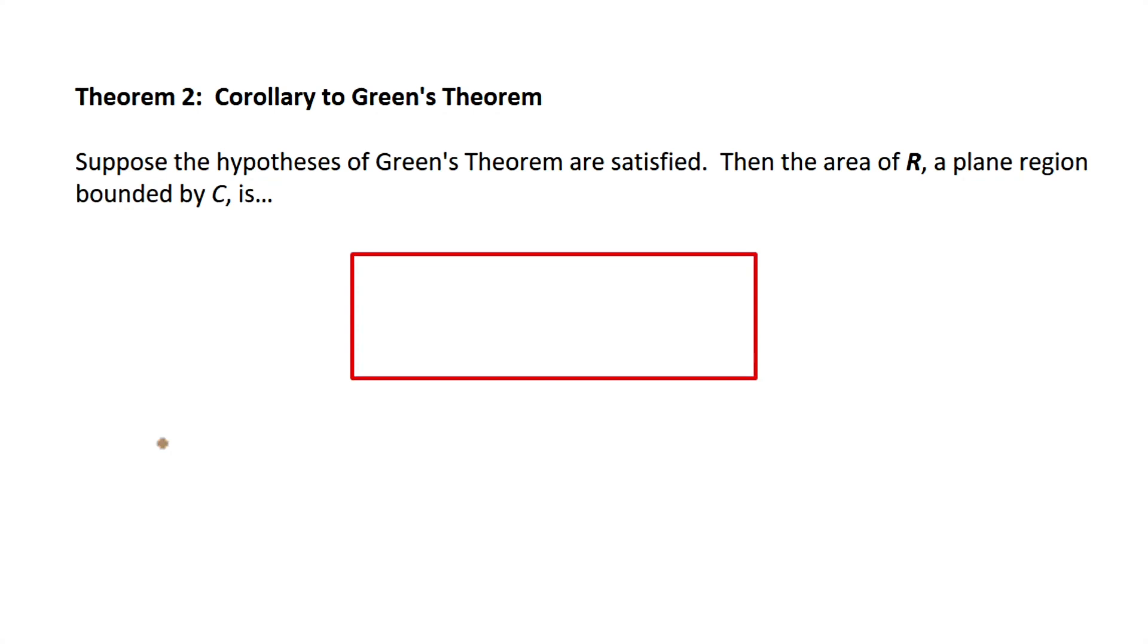Well, there's a million different integrals you could write. I'm going to write the one most common in the books that you'll see, but I don't usually use that one. I'll show you other ones you can get from this one. So the area of the region, then, is equal to one-half integral over C of... Here's how it's usually written. It's x dy minus y dx.